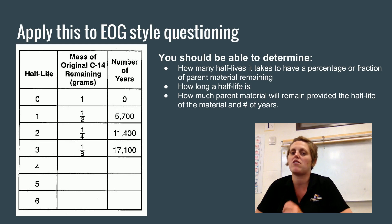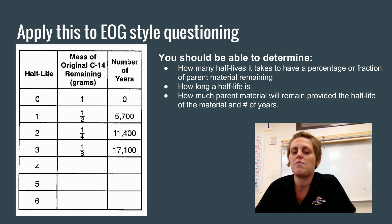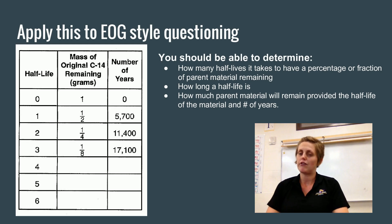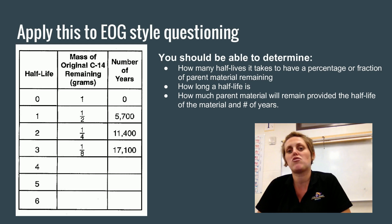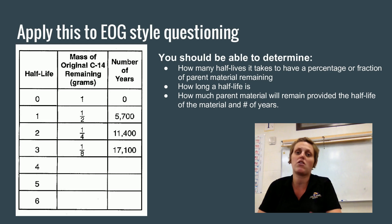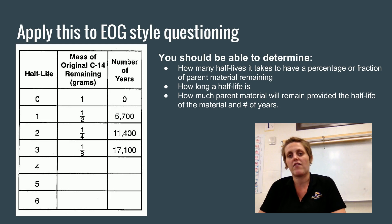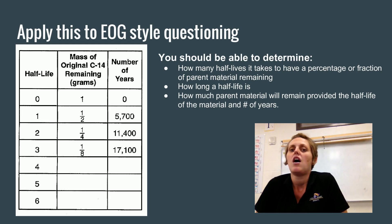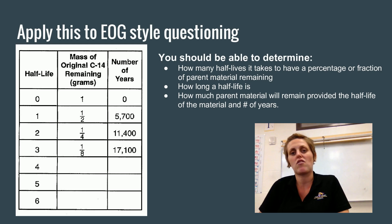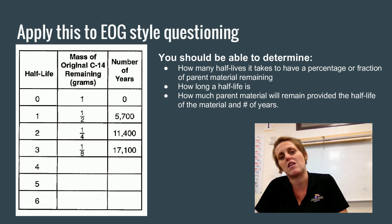The number of years can be found simply by multiplying the number of half-lives by the duration of one half-life. After one half-life it'd be one times your half-life, after two it'd be two times your half-life, after three it'd be three times your half-life. For the example shown, it's 5,700 years. So after one half-life you have 5,700 years, after two half-lives you have 11,400 years, and after three half-lives you have 17,100 years.